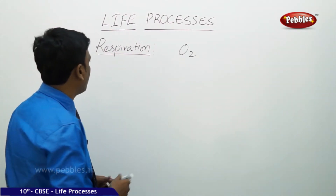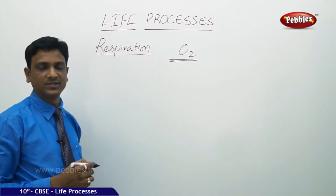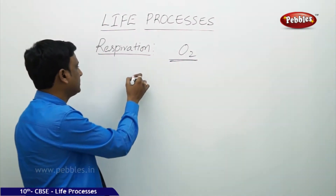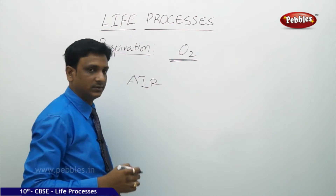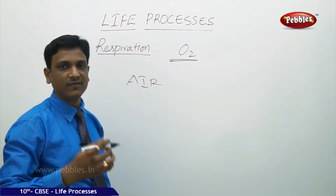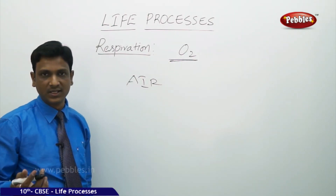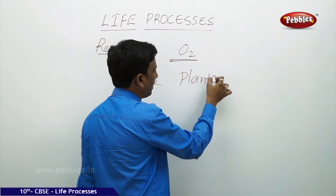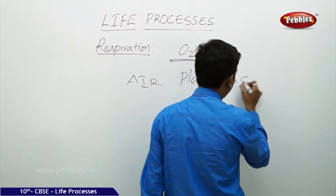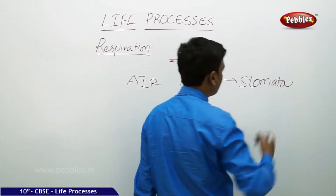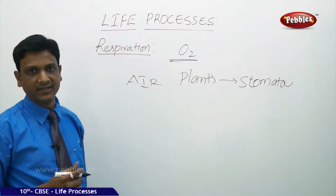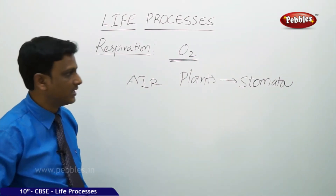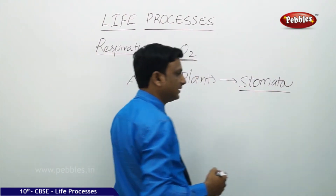Aerobic respiration requires and takes place only in the presence of oxygen. How do aerobic organisms get oxygen? Oxygen is present in the air and in water. Organisms on land get oxygen from the air. Plants have special pores called stomata through which oxygen can be taken in. Even when photosynthesis is not occurring, plants may take in oxygen from outside through stomata.